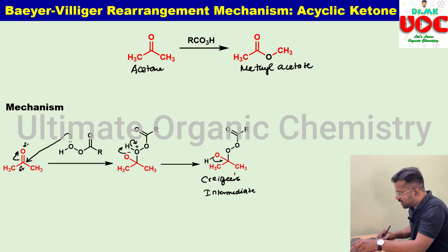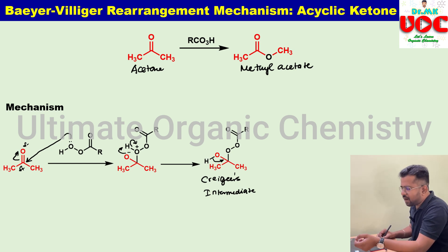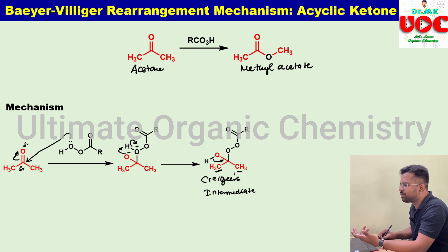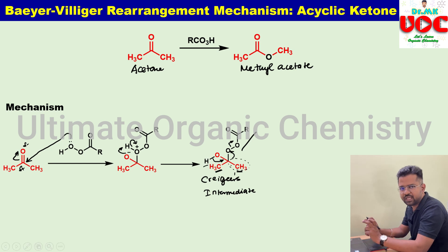Now the electron is moving toward the carbon atom. Since that carbon's valency is already 4, if a bond electron comes toward it, the valency would increase to 5. In order to compensate, either alkyl group should migrate. In this case both are methyl groups, so one methyl group migrates from the carbon atom to the oxygen atom. As a result, the electron moves toward the oxygen atom, and the carboxylate part and hydrogen combine and are removed as carboxylic acid as a by-product.